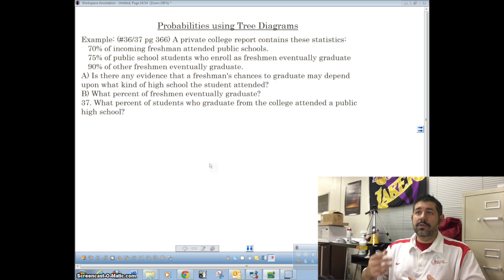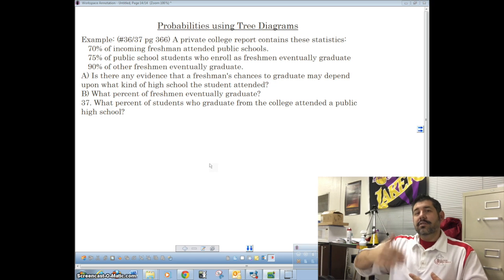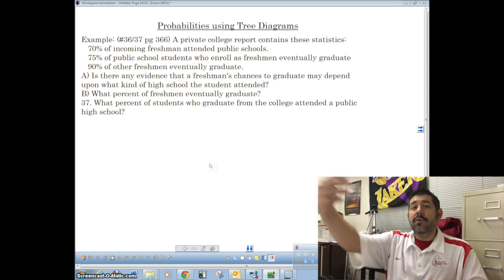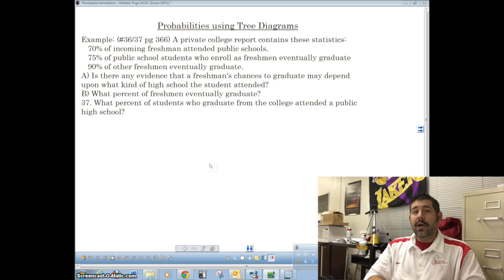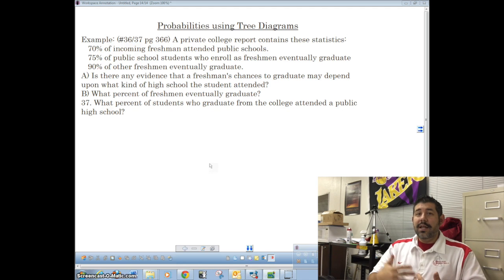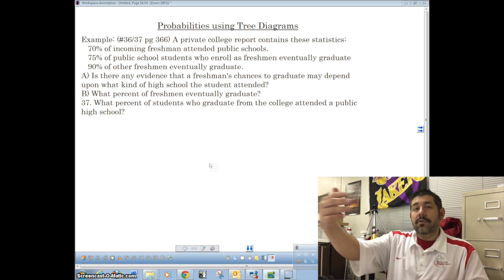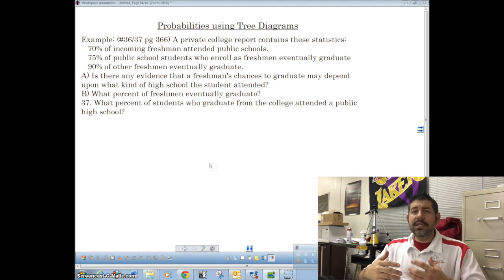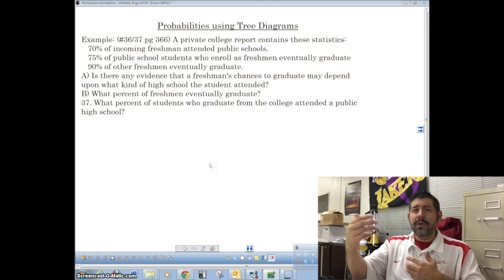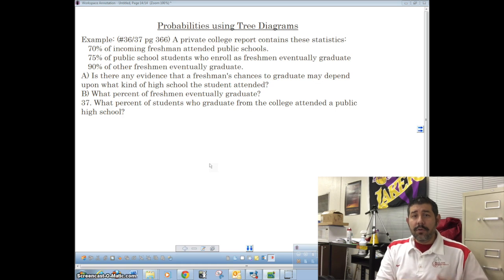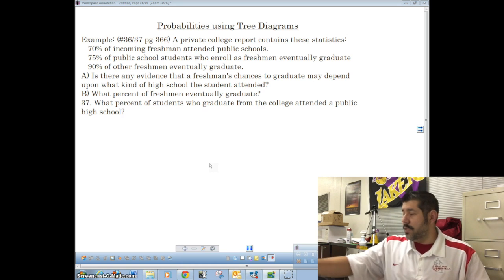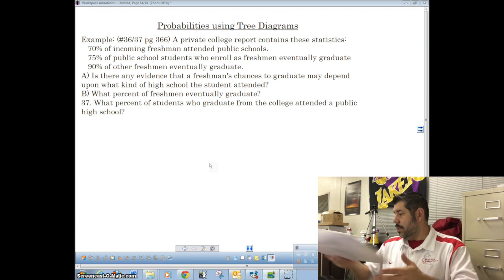Here's the thing that happens. We can either have 70% of the incoming freshmen attended public schools, which means that 30% did not attend public schools. Of those that attended public schools, 75% graduate, but 25% don't. However, if they came from another type of school, a private school, for instance, 90% of those graduate.